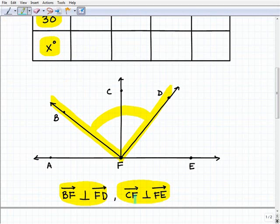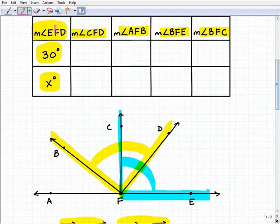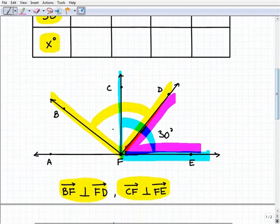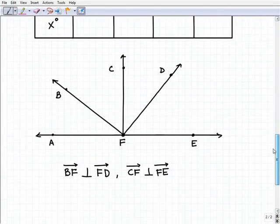And ray CF is perpendicular to ray FE. So this angle right here, these two rays are perpendicular. So this angle is 90 degrees. And the angle that we're given to basically kick this problem off is angle EFD. So we'll go ahead and start when EFD is 30 degrees, and we'll use all this information to basically find all the rest of these angles, and we'll be able to fill in our chart.